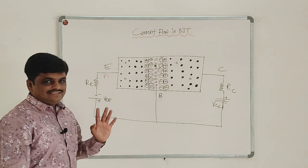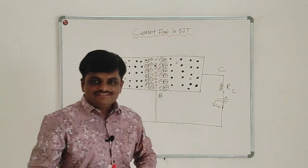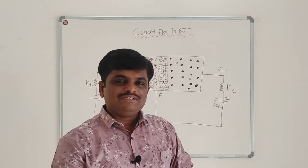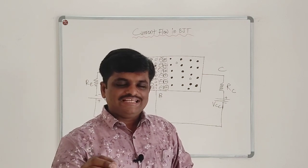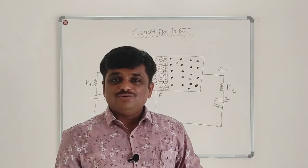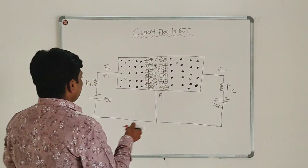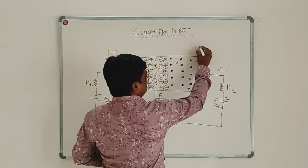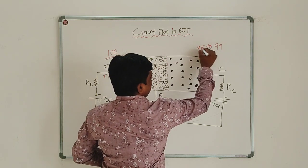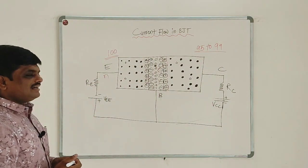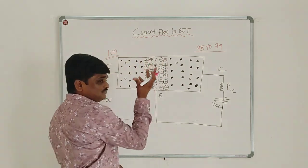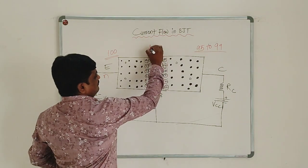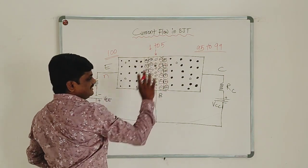In a transistor, the emitter is heavily doped, the collector is lightly doped compared to the emitter but not by a large extent, and the base is the lightly doped region. For example, if there are 100 impurities in the emitter region, there will be around 95 to 99 impurities in the collector region and the remaining 1 to 5 impurities will be in the base region.